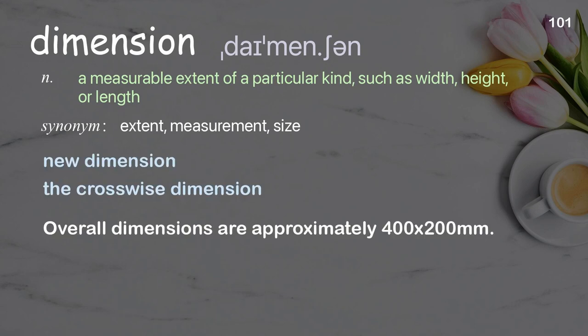Examples: New dimension. The crosswise dimension. Overall dimensions are approximately 400 by 200 millimeters.